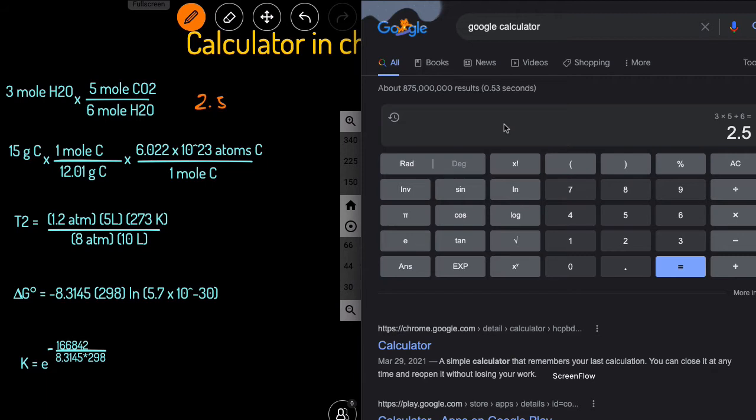So this next one, we have the grams, so we're converting this to atoms. We first go 15. Multiplying by 1 over is the same thing as dividing, so we can just do divide 12.01, and then multiply by 6.022 times 10 to the 23rd.